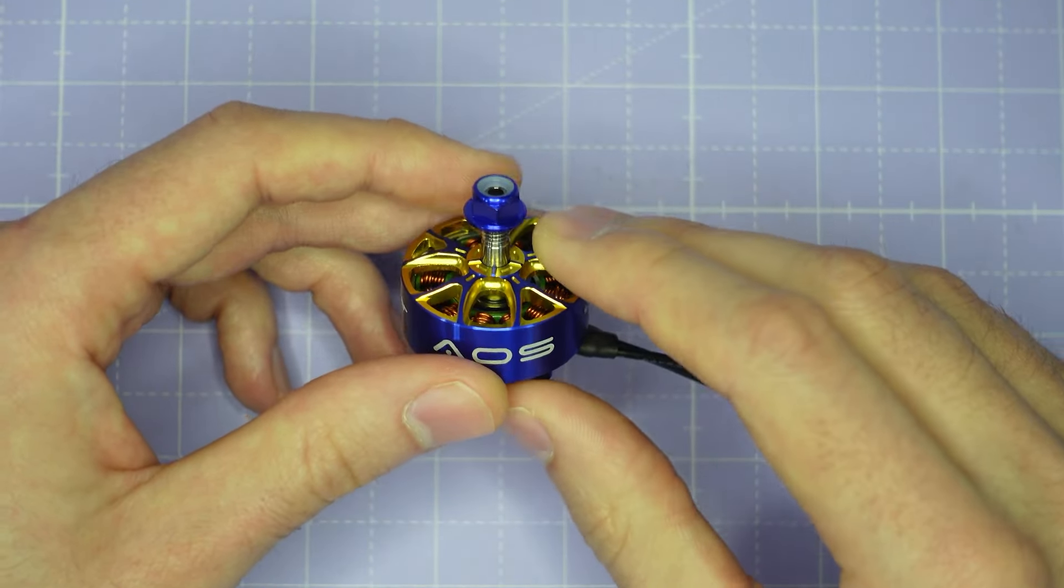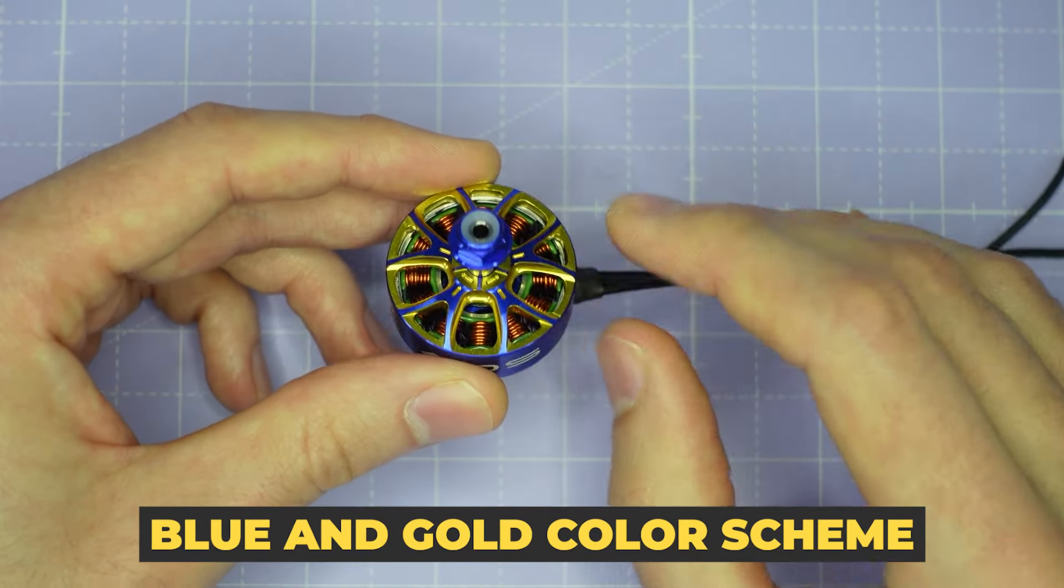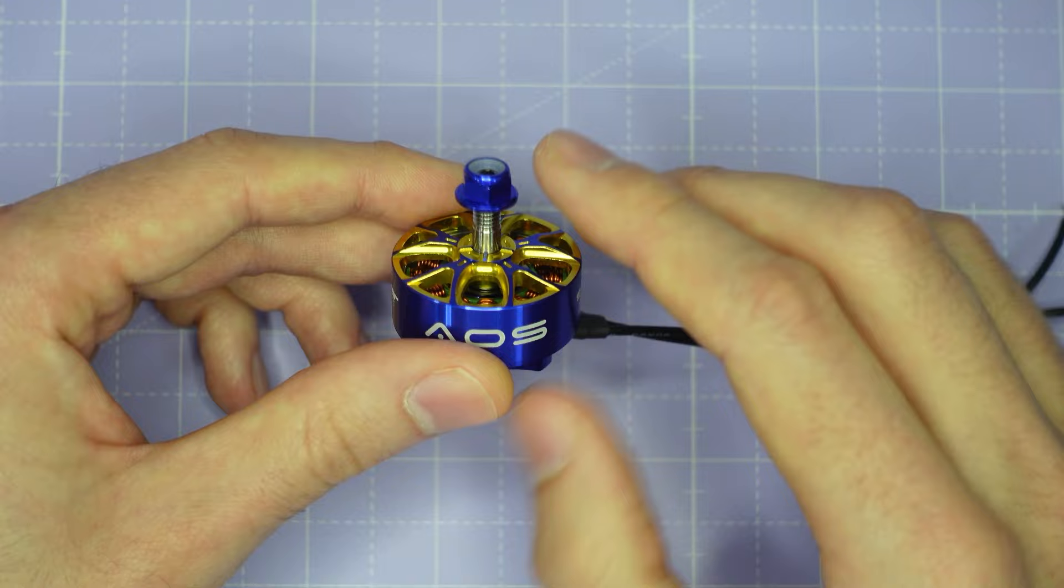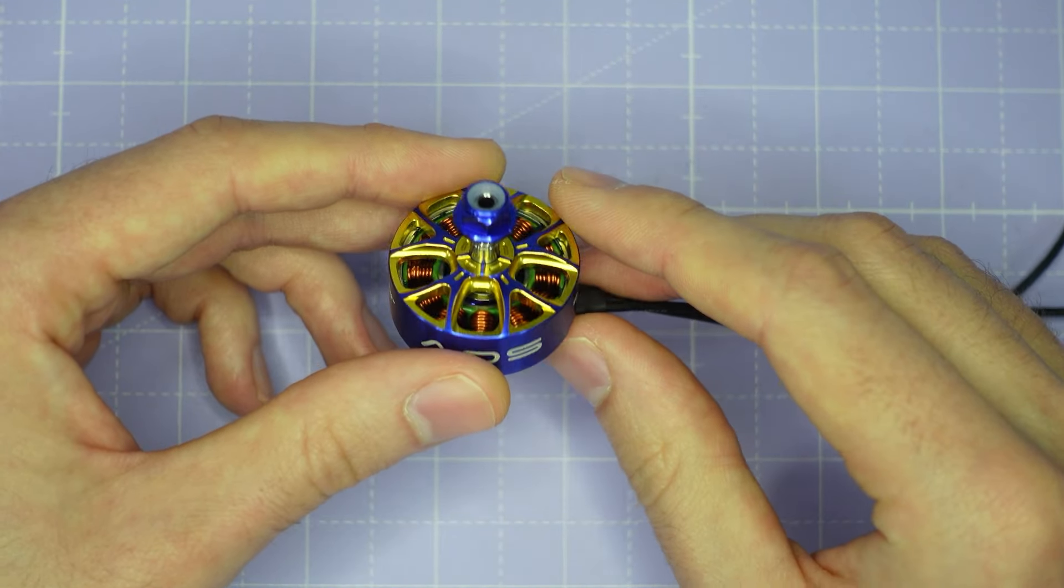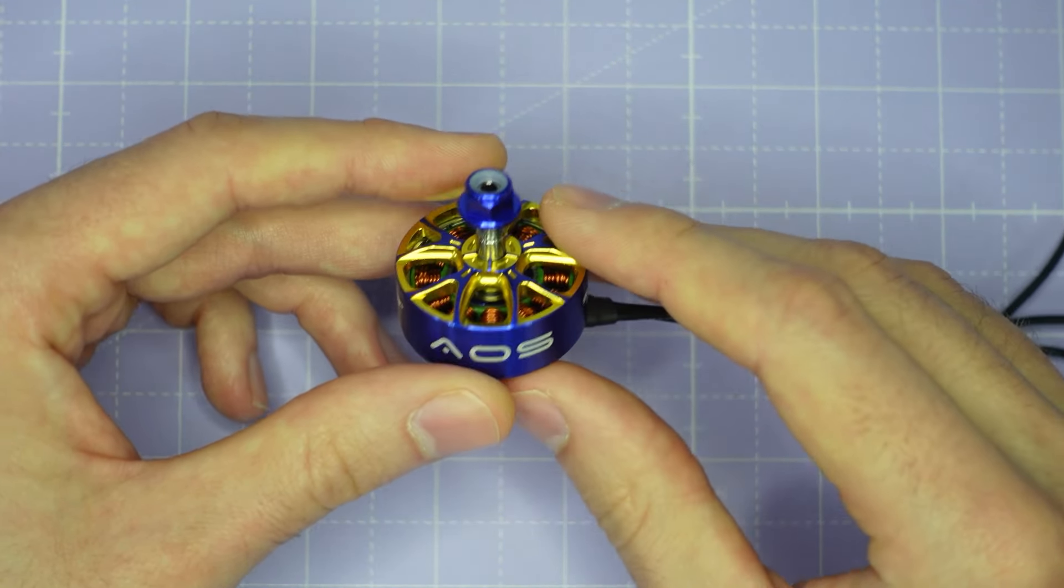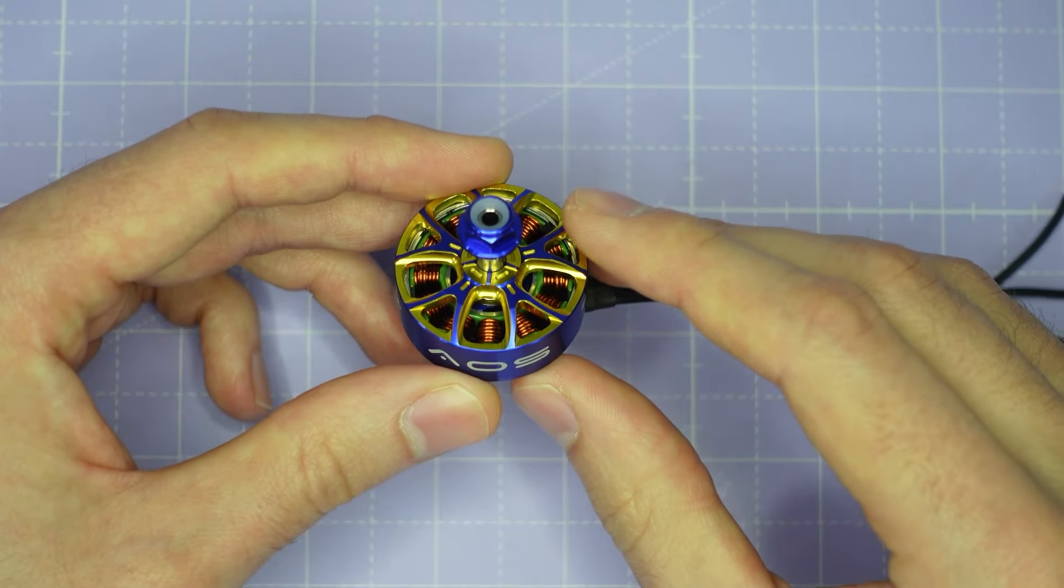Looking at the color scheme now, we have this blue and gold color scheme with a matching blue prop nut, and I may be biased, but I think this is the most beautiful color scheme that RC and Power have ever produced, and I really love the way this motor looks.